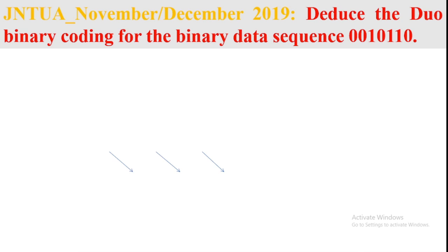Hi everyone, welcome back to Prakash tutorials. In my previous video we discussed the concept of Duo binary signaling. In this video I am going to discuss an example of Duo binary signaling, and this is a previous examination question. The example is: deduce the Duo binary coding for the binary data sequence 0, 0, 1, 0, 1.